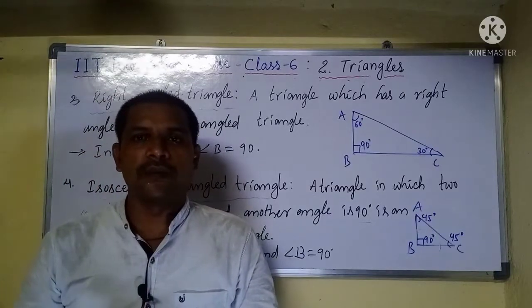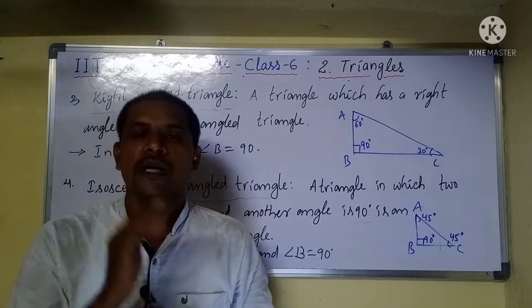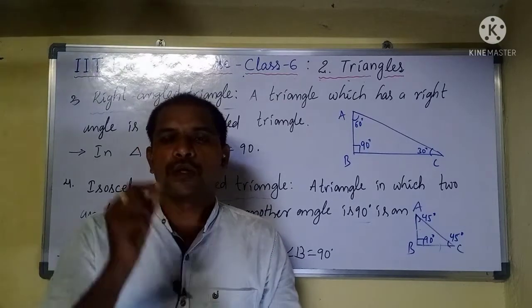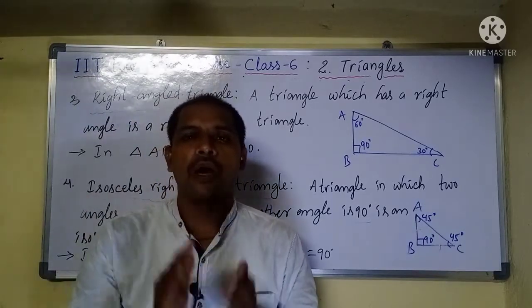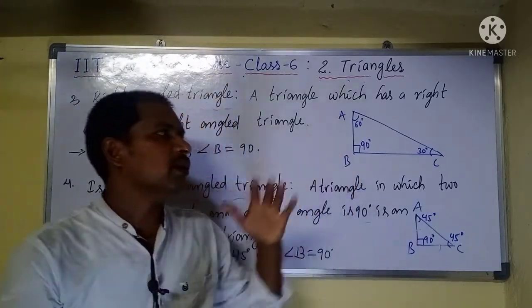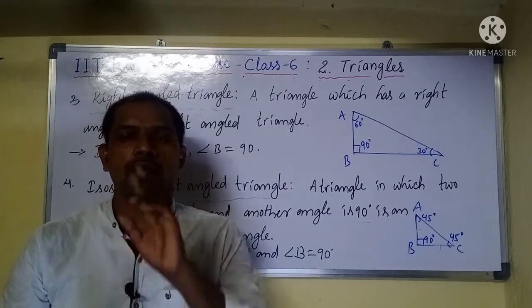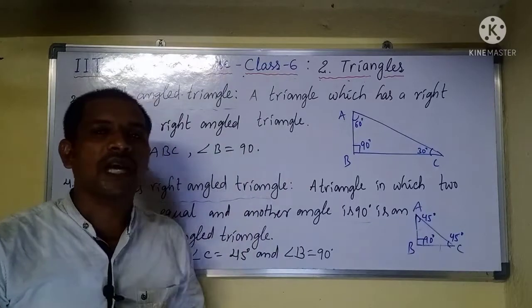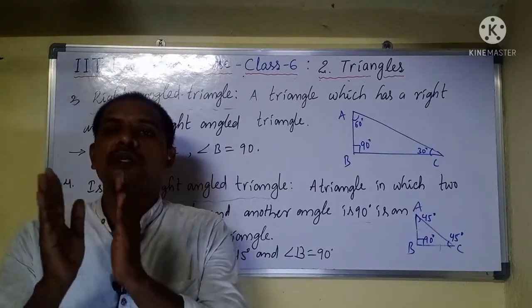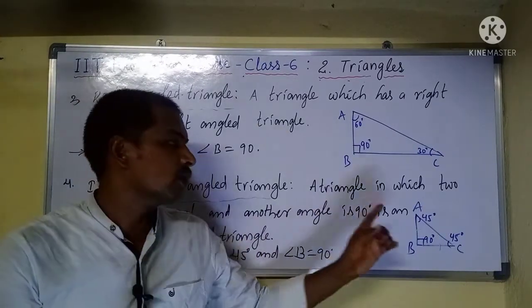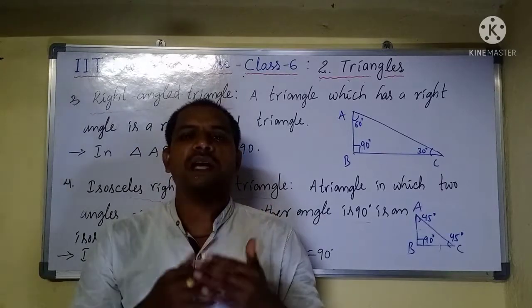Based on angles, there are four types. First, acute angle triangle — all three angles are less than 90 degrees. Second, obtuse angle triangle — one angle is greater than 90 degrees and the remaining two are less than 90 degrees. Third, right angle triangle — one angle is exactly 90 degrees and the remaining two are less than 90. Fourth, isosceles right angle triangle — one angle is 90 degrees and the remaining two angles are equal, each being 45 degrees.